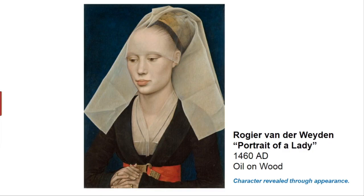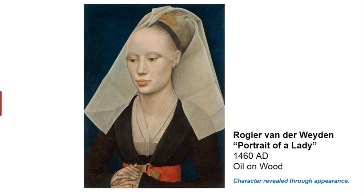This work is by van der Weyden, again a portrait. You'll notice he takes the same Flemish realism and mixes certain feelings with it. Notice she doesn't look at us — she's looking down. Also notice how complex her fingers are represented and how tight that gesture is, as if she's trying to contain herself. You get the impression of an individual who's very shy. Van der Weyden starts to care not just about appearance, but the way appearance can express what's inside the person — their feelings, their character.